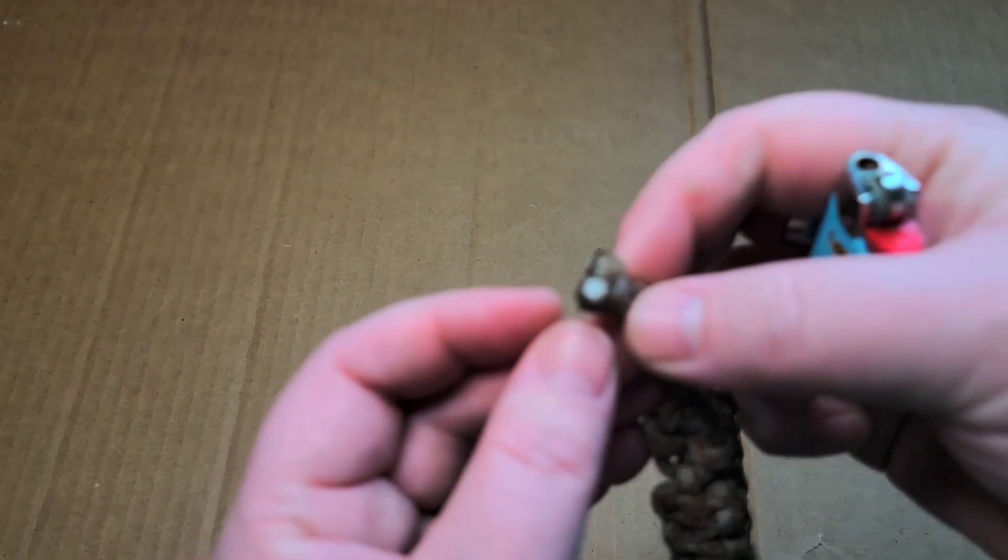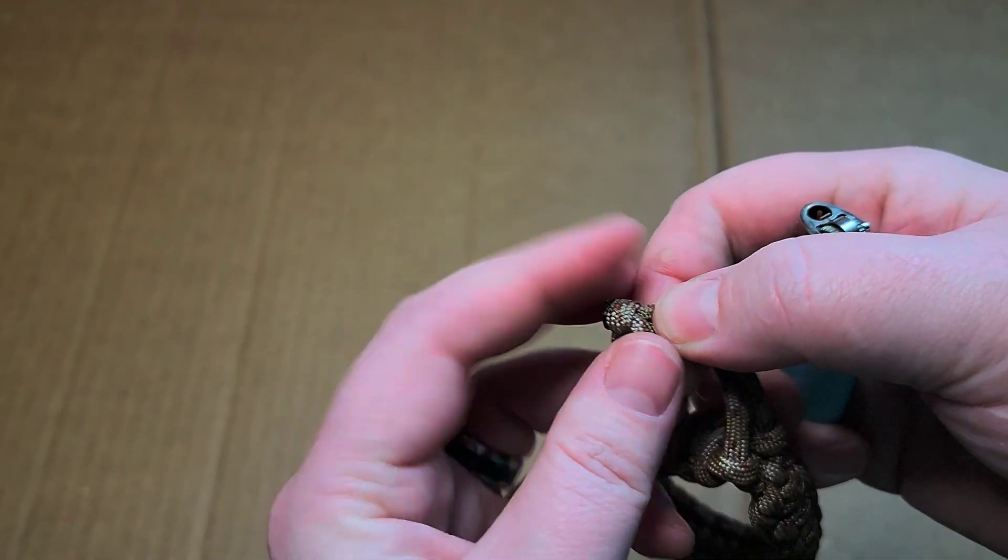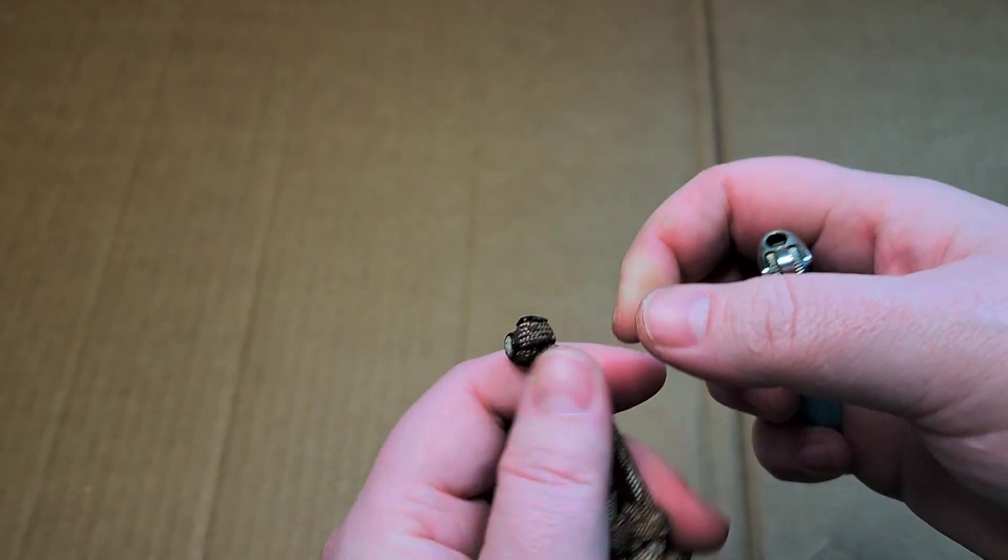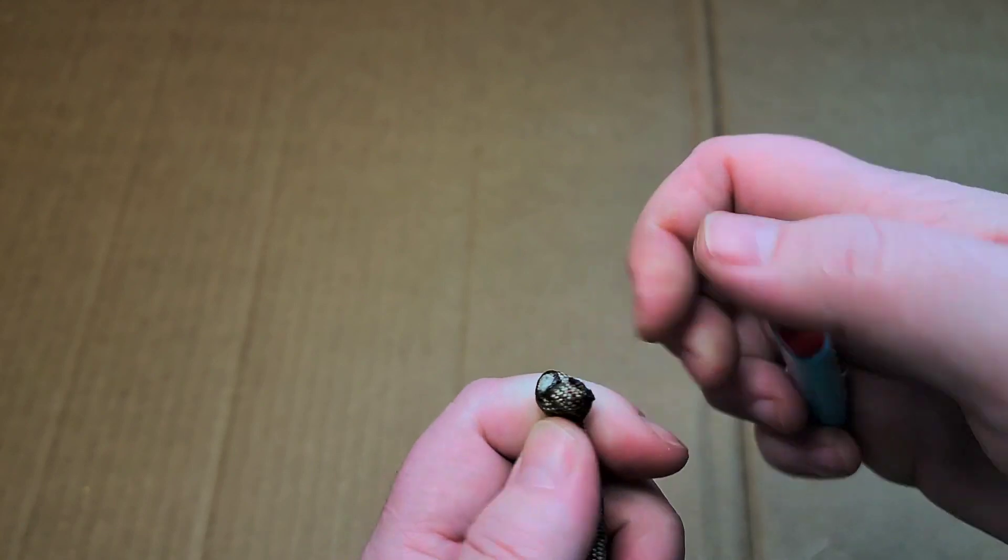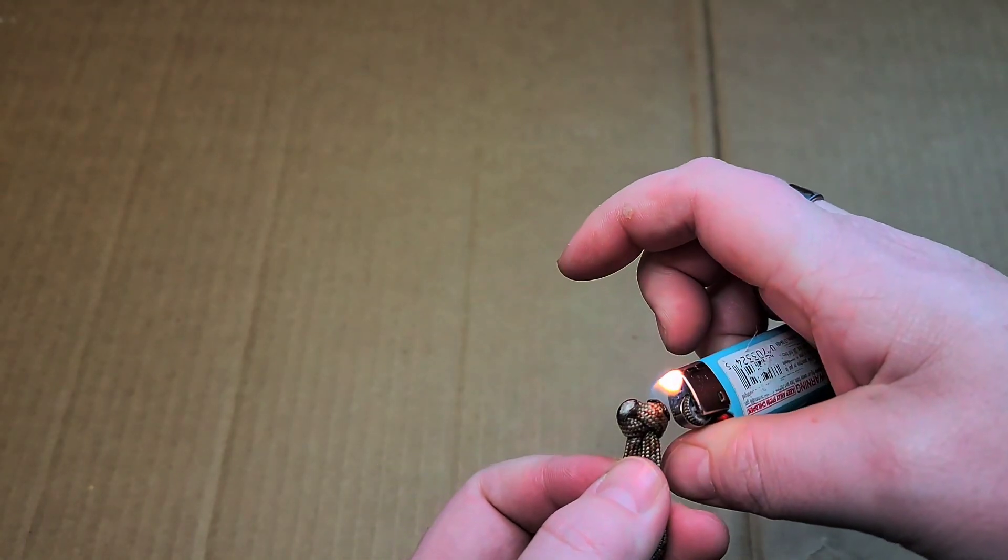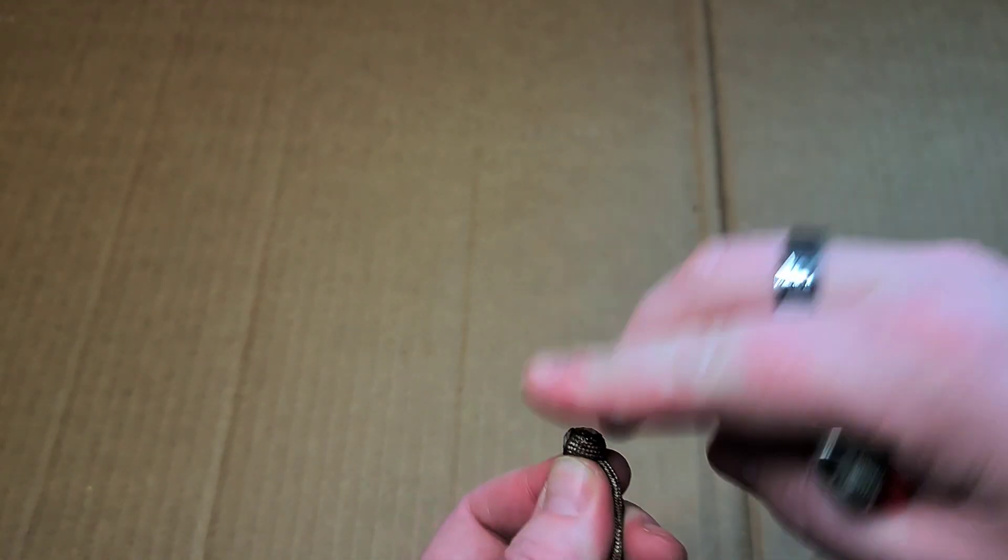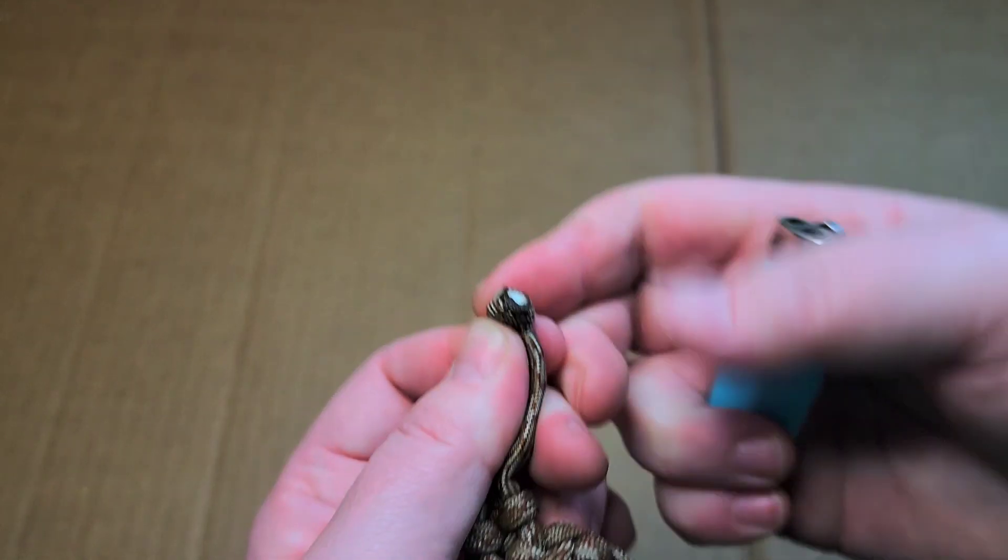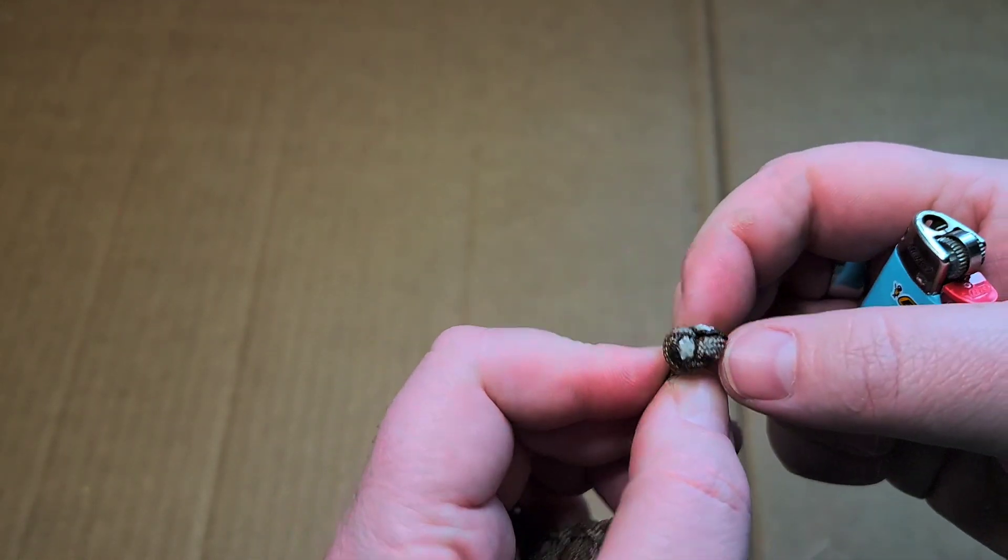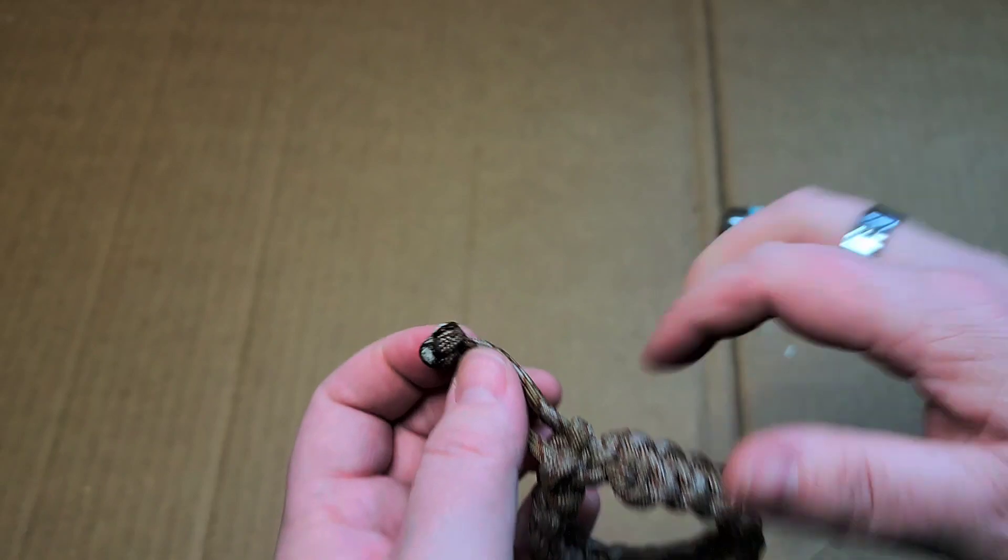For the most part, cinching it keeps it pretty tight. I haven't really had one come apart except the one that Thor chewed up. Just like that.